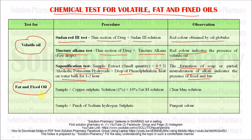The second test: take the sample and add 1% copper sulfate solution, then add 10% sodium hydroxide solution. What is observed is a clear blue solution. If fat or fixed oil is present in our sample, it undergoes hydrolysis and glycerol is released. The cupric hydroxide formed does not precipitate out because it is soluble in glycerol, and that is why a clear blue solution is observed.